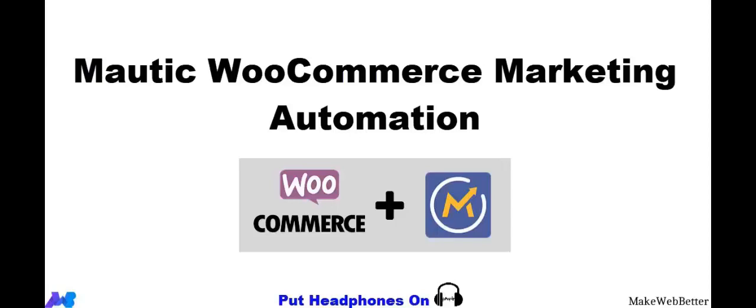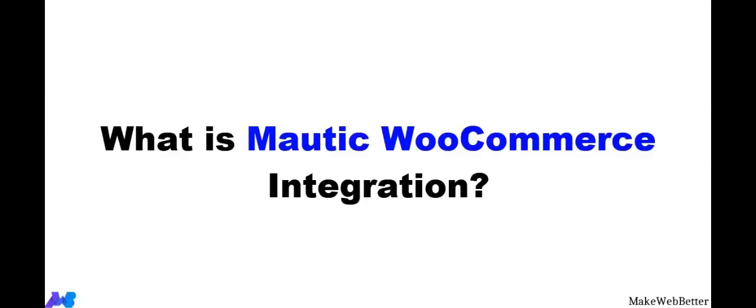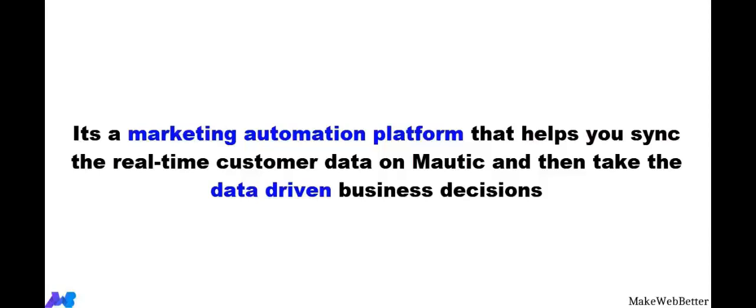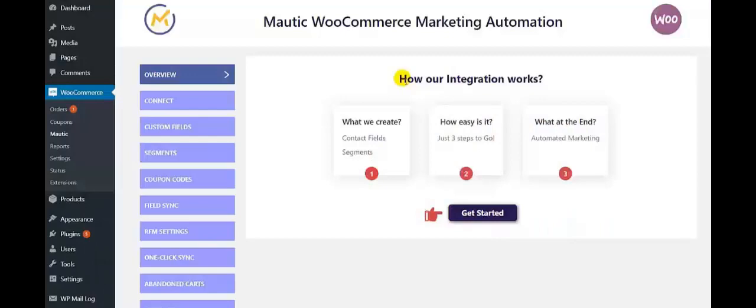Hi there, this is Drishti with Make Web Better and in today's video I have come up with the demo on Motech WooCommerce Marketing Automation Platform. Here I'll show you each and every connection and the working steps. So it's a marketing automation platform that helps you sync all the real-time customer data on Motech and then take data-driven business decisions. Moreover, it is featured with an automated customer data segmentation system.